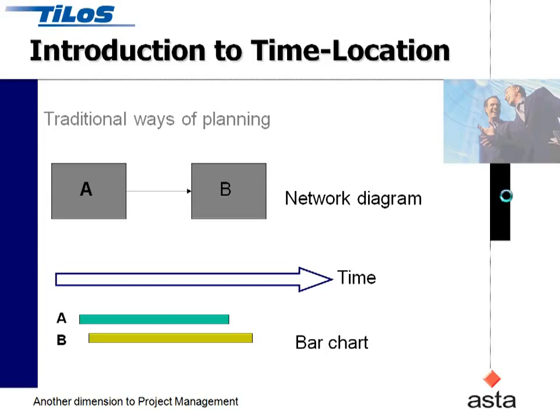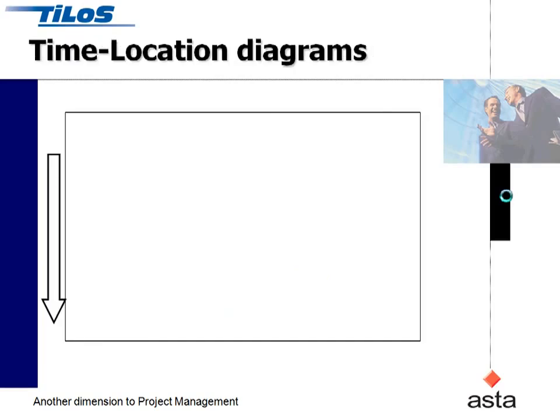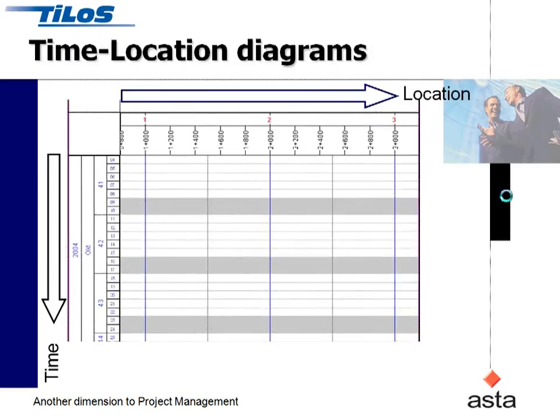You can see here that activity B starts and finishes after activity A. But if we're looking at this as a linear project, we need to plot that on a grid where we've got distance in one dimension and time in the other.